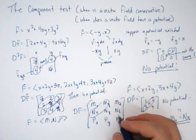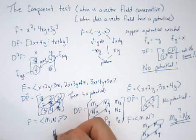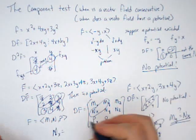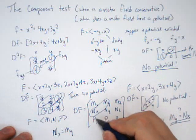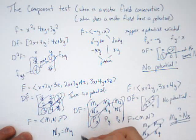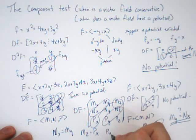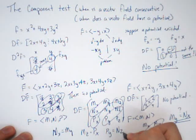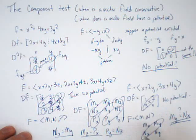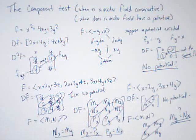And I need to know, are those the same? So does nx equal my? Are those two the same? Does mz equal px? And are those two the same? Does py equal nz? You've got to check all three. If all three are the same, there is a potential. If not, there isn't.